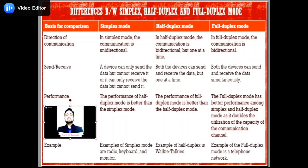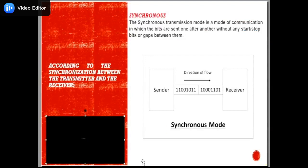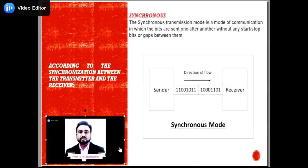According to the synchronization between transmitter and receiver, transmission is divided into synchronous and asynchronous. In synchronous transmission mode, bits are sent one after another without any start bit, stop bit, or gap between them. Both the sender and receiver are governed by the same system clock, and this way synchronization is achieved. In synchronous mode, bytes are transmitted in blocks as a continuous stream of bits, and since there are no start and stop bits in the message block, it is the responsibility of the receiver to group the bits correctly. The receiver counts bits and groups them into 8-bit units, continuously receiving information at the same rate that the transmitter sends it.